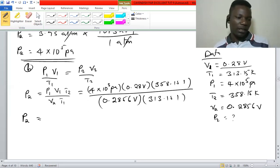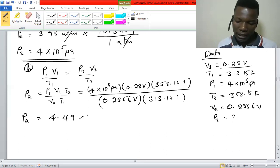You punch that on the calculator and what you get is 4.49 times 10 to the power 5 pascals.